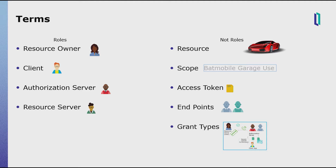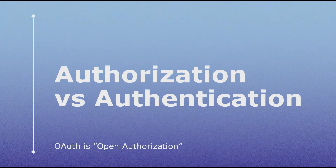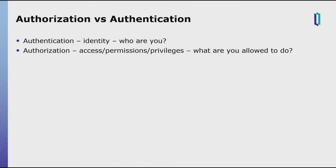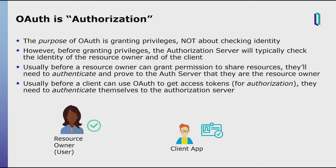Let's switch gears and talk about authorization versus authentication. Remember that OAuth is open authorization. Authentication is a process of proving identity — it asks the question, 'Who are you?' Authorization is a process of granting access or permissions or privileges — it asks, 'What are you allowed to do?' OAuth stands for authorization; the purpose of OAuth is granting privileges, not checking identity. But before granting privileges, usually the authorization server will check the identity of the resource owner and the client. Before a resource owner can grant permission to share resources, they'll need to authenticate and prove they're really the resource owner. And before a client can get an access token, they have to authenticate themselves to the authorization server.